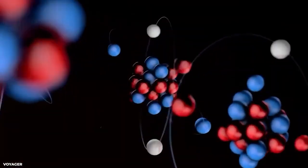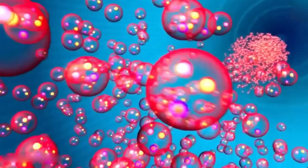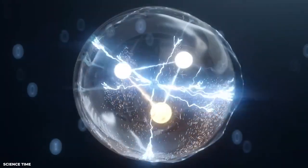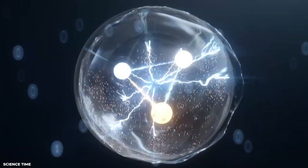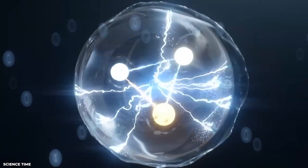Since the initial pentaquark was discovered, a number of others have been identified, including several that include four up quarks and one down quark, as well as others that have three up quarks and two down quarks.